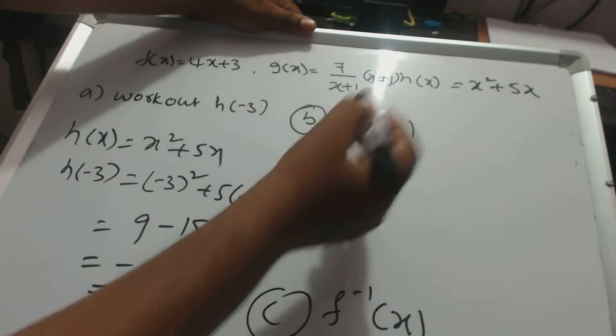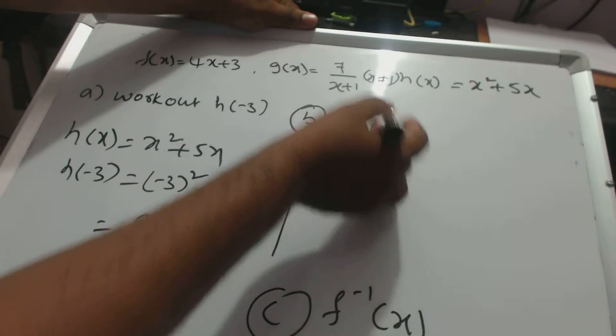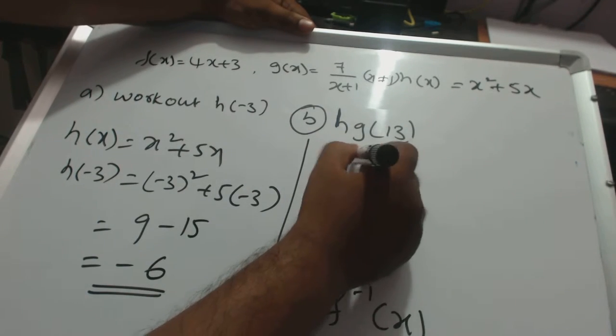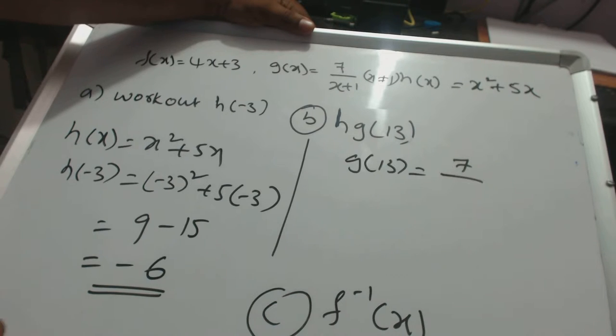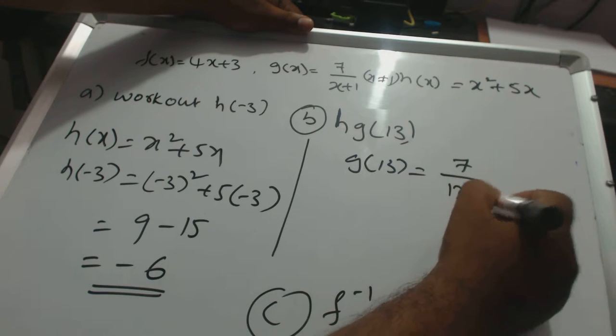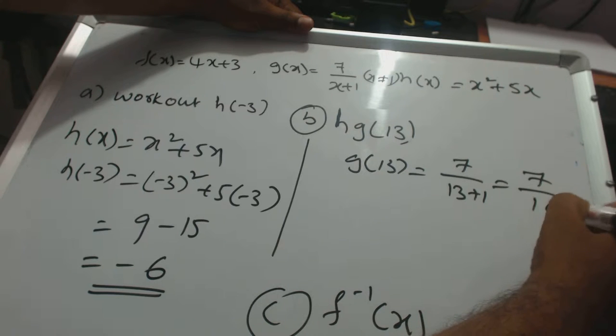g of 13. First g of 13 means you have to substitute here. What is the g of 13? So 7 over 13 plus 1 which is equal to 7 over 14, that is equal to 1 by 2.